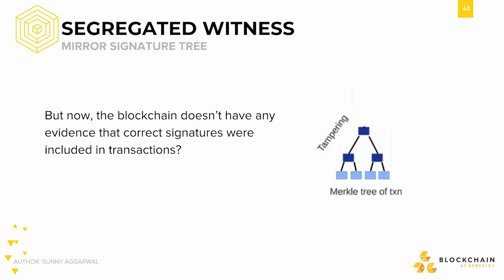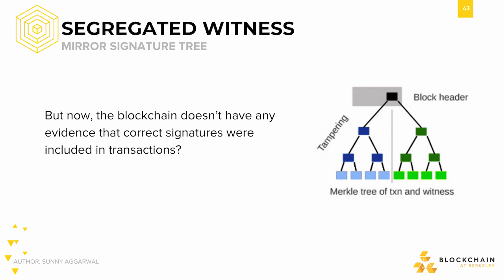One issue is that because we segregated signatures from other transaction data, the blockchain doesn't have evidence that the correct signatures were included in their respective transactions. To fix this, SegWit also comes with a change to the regular Merkle tree structure of Bitcoin. Instead of a Merkle tree with just transactions, SegWit-enabled miners construct Merkle trees with one half transactions and one half the transaction segregated witnesses, in a sense creating a mirrored Merkle tree. This way, we have information about transactions and their segregated witnesses all contained within the same block header, giving us back all the beautiful properties of tamper evidence.